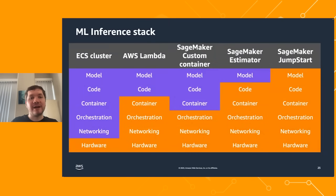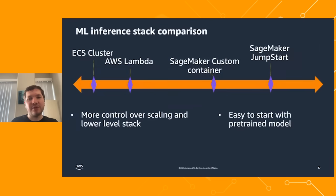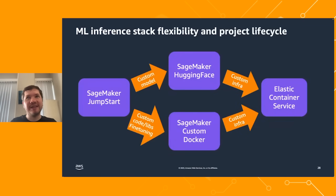Now that we've covered different inference options, there are a lot of options on AWS. Depending on what you want, you can either start very early or have more flexible infrastructure — it's your choice. On the left side we have more control over scaling and the lower-level stack, and on the right we have options to easily start with just a model without worrying about underlying infrastructure. The main advantage is that this is not a decision set in stone — it can change through the project lifecycle depending on whether you want a custom model, custom code or library, or if you've fine-tuned your model and want to use that.